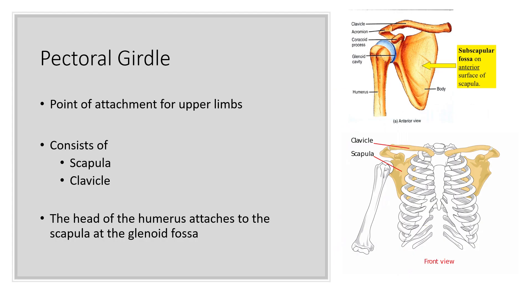Starting with your pectoral girdle, which is the point of attachment for your upper limbs. This consists of the scapula and the clavicle. The clavicle attaches to the scapula at the acromion. There's also the glenoid fossa on the scapula, which is where the head of the humerus articulates. There's also the subscapular fossa on the anterior surface of the scapula. And of course the clavicle is your collarbone.